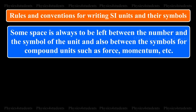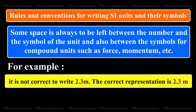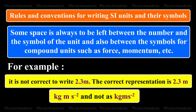Some space is always to be left between the number and the symbol of the unit and also between the symbols for compound units such as force, momentum, etc. For example, it is not correct to write 2.3 meters. The correct representation is 2.3 meter, kilogram meter per square and not as kilograms raised to minus 2.